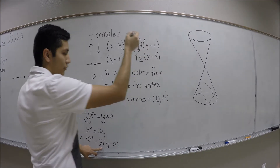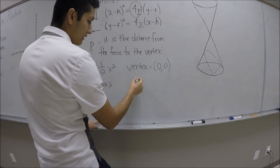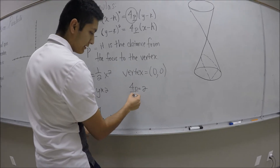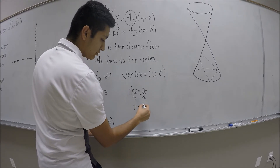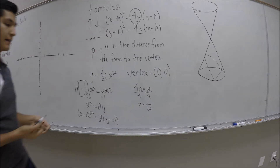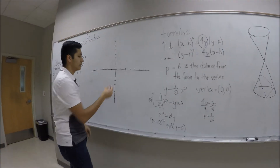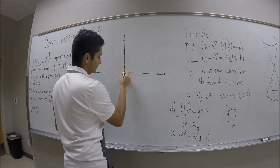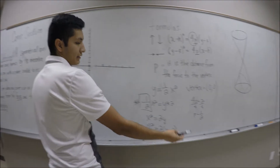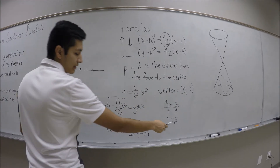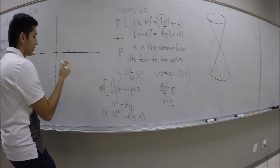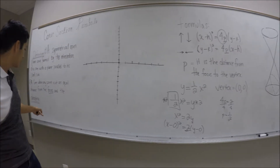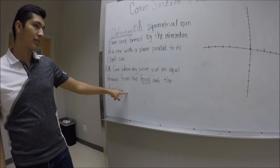My name is Aaron Moreno and I'll be presenting on the conic section of the parabola. The definition of a parabola is a symmetrical open plane curve formed by the intersection of a cone with a plane parallel to its side. A second definition: a curve where any point is at an equal distance from the focus and the directrix — two key terms we'll use in our worked example.